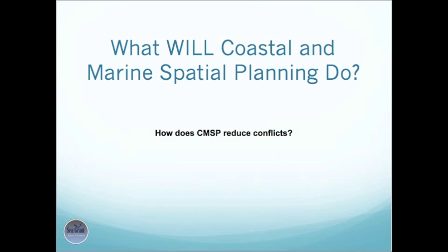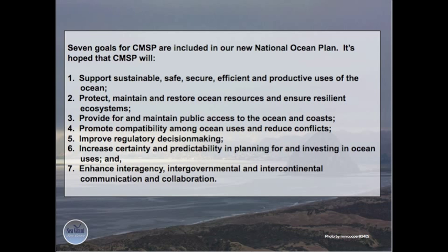What will Coastal and Marine Spatial Planning do? How does CMSP reduce conflicts? Seven goals for CMSP are included in our new National Ocean Plan. It's hoped that CMSP will: support sustainable, safe, secure, efficient, and productive uses of the ocean; protect, maintain, and restore ocean resources and ensure resilient ecosystems; provide for and maintain public access to the ocean and coasts; promote compatibility among ocean uses and reduce conflicts; improve regulatory decision-making; increase certainty and predictability in planning for and investing in ocean uses; and enhance interagency, intergovernmental, and intercontinental communication and collaboration.